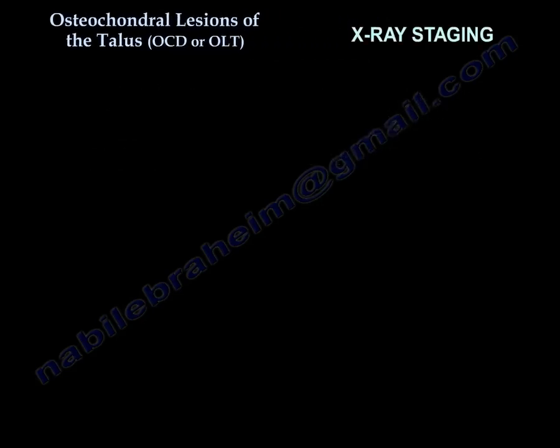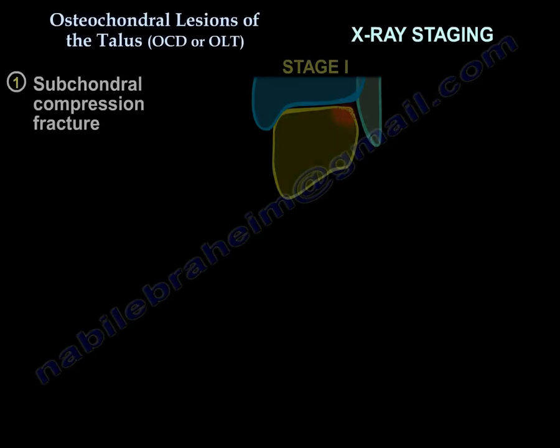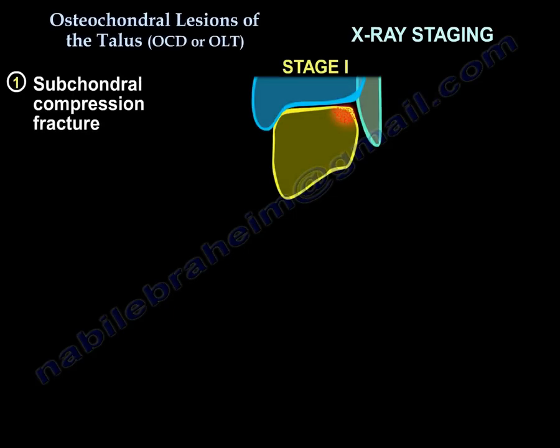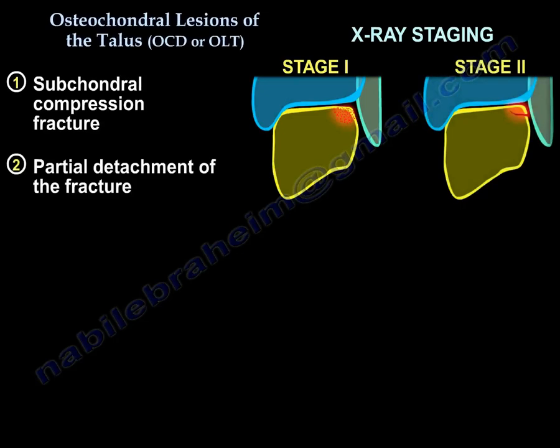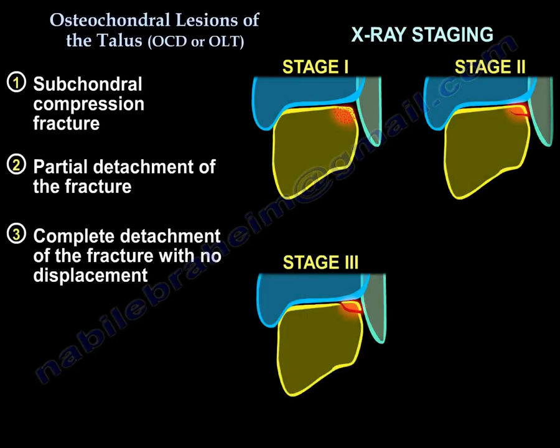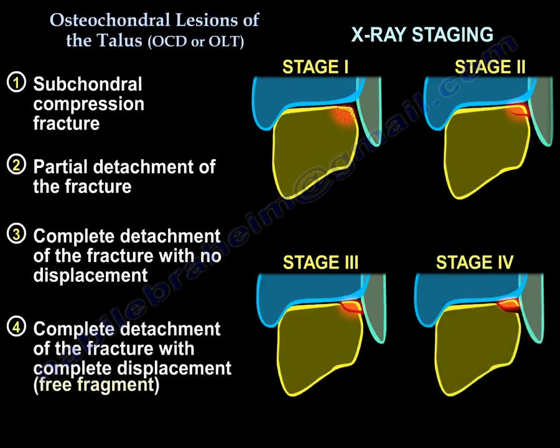Starting with x-ray staging: Stage 1 is a subchondral compression fracture. Stage 2 is partial detachment of the fracture. Stage 3 is complete detachment of the fracture but no displacement. Stage 4 is complete detachment of the fracture with complete displacement — essentially a free fragment.